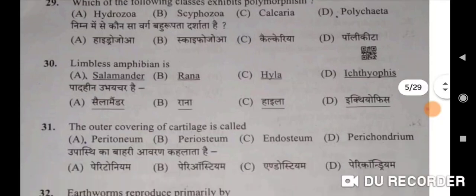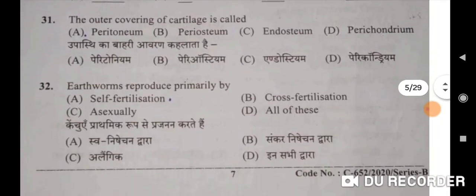Thirty-first question: the outer covering of cartilage is called perichondrium — Option D. Upasthi ka bahari avaran kehlata hai perichondrium. Thirty-second: earthworms reproduce primarily by cross-fertilization — B will be the correct option. Kenchwe prathamik roop se prajanan karte hai sankar nishechan dwara.